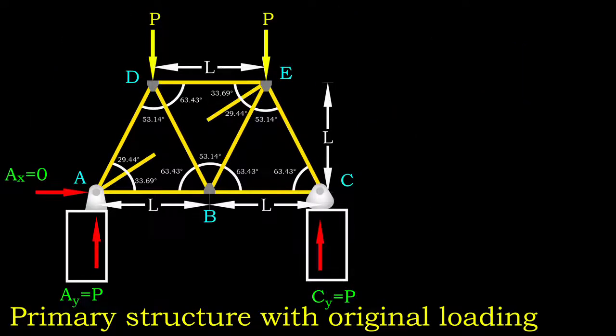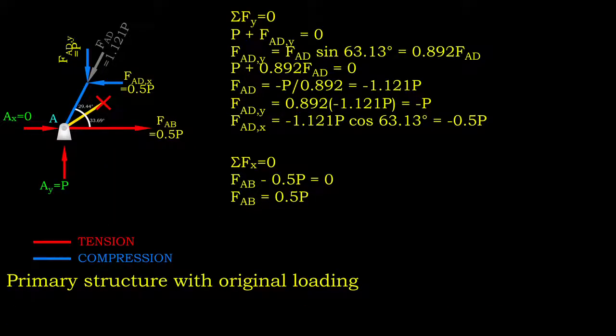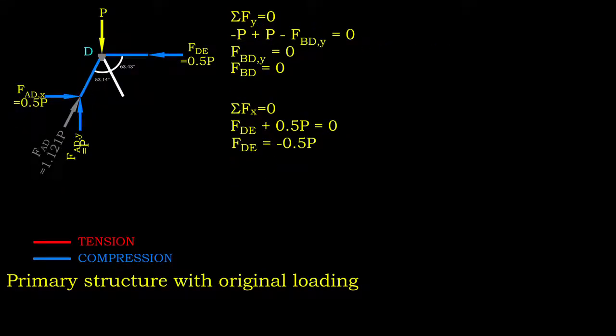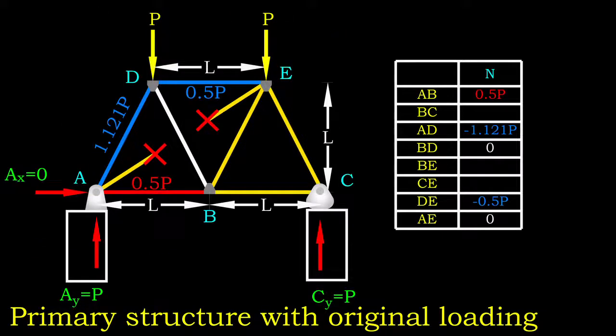Let's get started. First of all, we focus on the real loading condition and determine the support reactions. Then, we use method of joints to determine the internal forces developed in truss members. For a symmetrical truss like this case, we can first determine the member forces in half of the truss and mirror it to get the full picture of it.